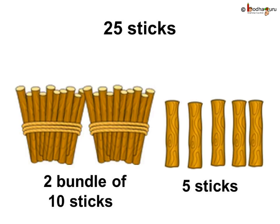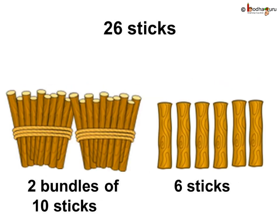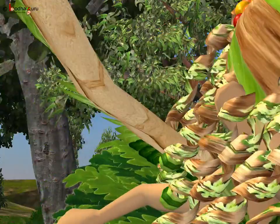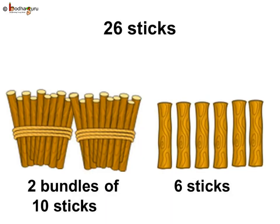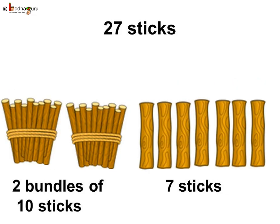25 sticks means two bundles of 10 sticks and five sticks. And two bundles of 10 sticks and six sticks is 20, 21, 22, 23, 24, 25, 26 sticks. Remember, in the story, Bholla had difficulty counting and remembering 26 sticks. But bundling in 10s made it easier to count. And two bundles of 10 and 7 sticks is 20, 21, 22, 23, 24, 25, 26, 27 sticks. It is 27.